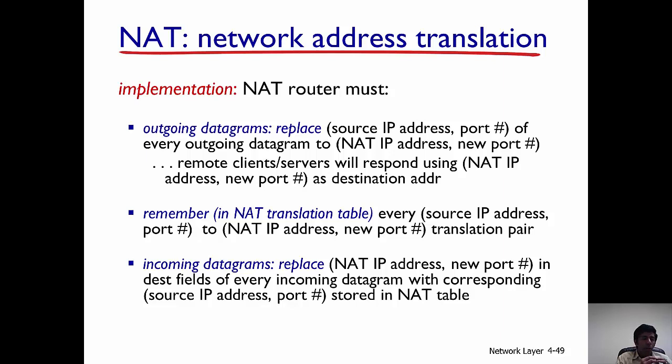Now let's look at how NAT is implemented. The source IP address and port of every outgoing datagram is replaced with the NAT IP address and a new port. In the NAT address translation table, a mapping is saved between the original source IP address and port, and the NAT IP address and new port. So the NAT table contains entries with source IP address, port number, NAT IP address, and new port number.